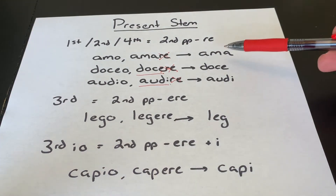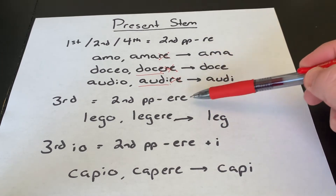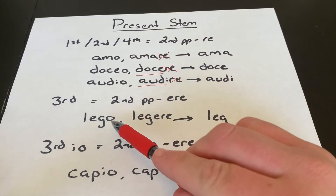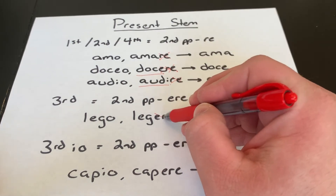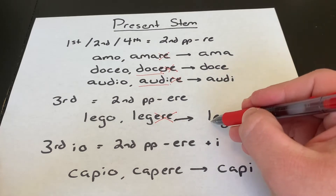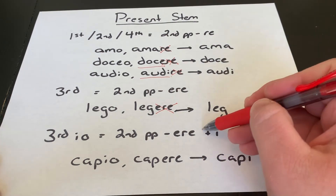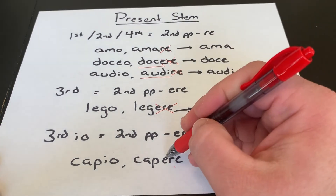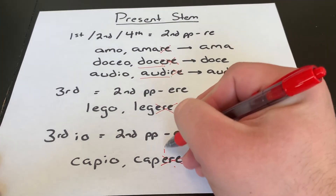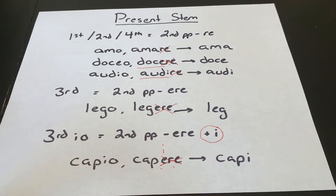Third conjugation is a little different. For both third and third IO, instead of taking off just the RE, you're going to take off the entire ERE. So for lego, legere — third conjugation — you take off the ERE, which gives you leg as the present stem. Third IO adds an extra step: it adds an I to the stem because it's an I-stem verb. So for capio, capere — third IO — you take off the ERE and then add an I, giving you capi as the present stem.